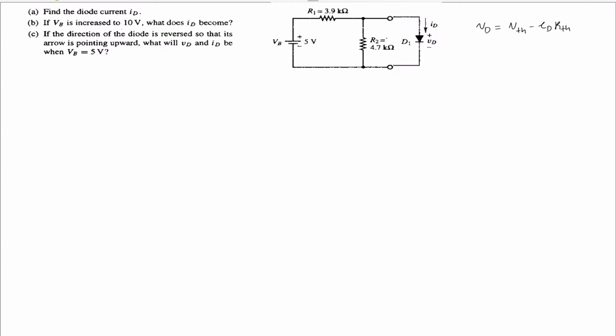We can then find Vthevenin and Rthevenin. For section A, Vthevenin is the voltage across the R2 resistor, the two-ohms resistor. That is VB times R2, divided by R1 plus R2. Vthevenin is then equal to 2.73 volts.